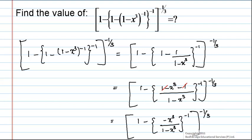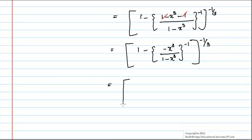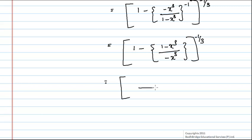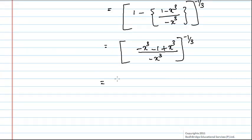The whole power minus 1 by 3, which is equal to 1 minus of 1 minus x cube divided by minus x cube, the whole power minus 1 by 3. On simplifying this, we get minus x cube in the denominator and in the numerator we get minus x cube minus 1 plus x cube, the whole power minus 1 by 3. Which simplifies to minus 1 divided by minus x cube, the whole power minus 1 by 3.